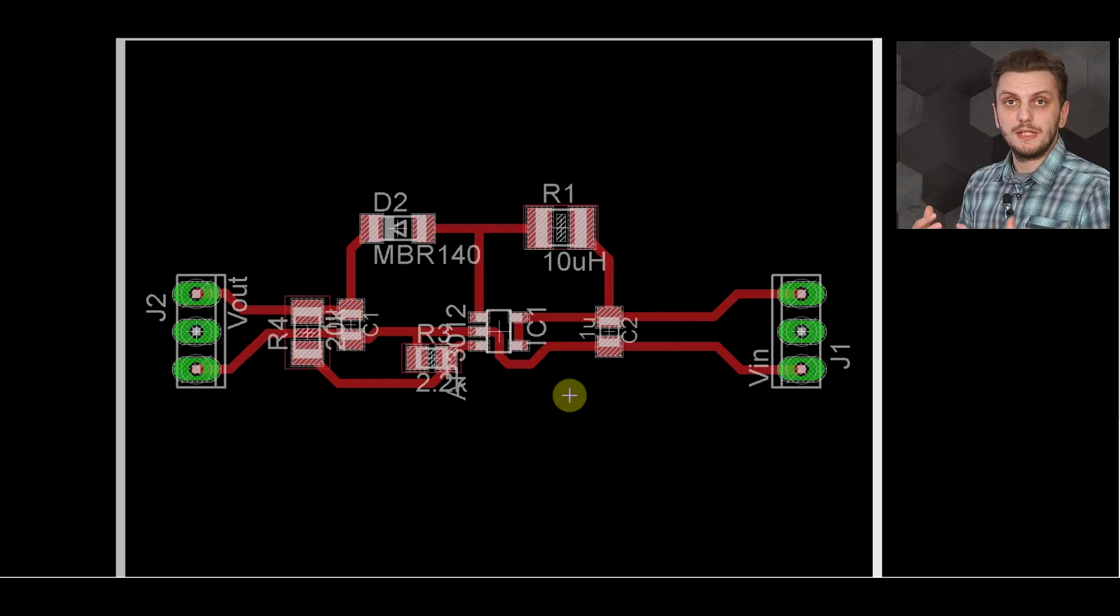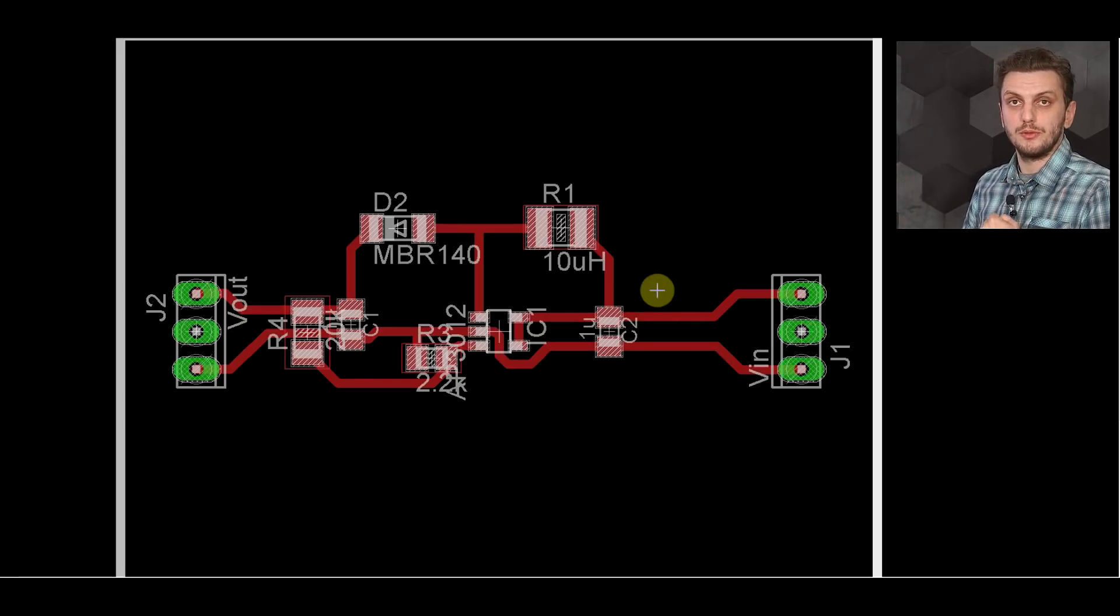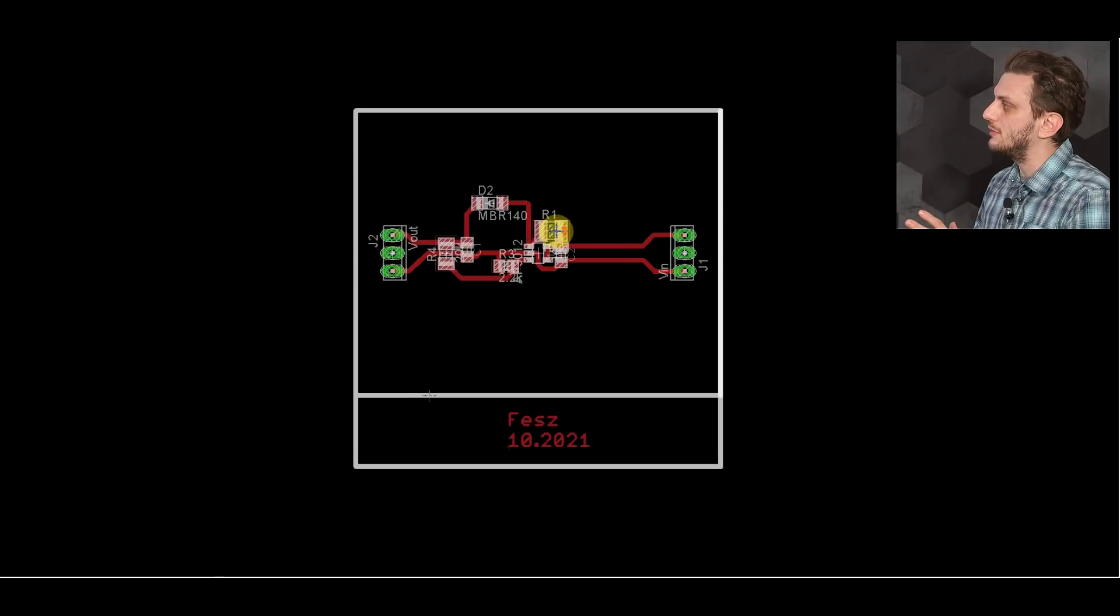a diode and the feedback network. So this is the original design that had all of the loops large. And I prepared two new designs, one in which the input loop is small and one in which the output loop is small. So in this design, the IC is in the exact same position, the output loop is exactly the same, but the input loop was made much smaller.